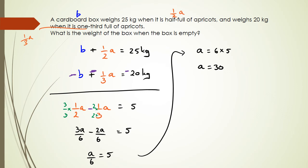So that means a full box of apricots is equal to 30. So that's not what the question is asking. The question is asking for the weight of the box when the box is empty. So I'm going to say B, which is the original equation, plus half of A is equal to 25 kgs. So that means B plus, now we figured out what A is, that was 30 kgs, and that's equal to 25. Now half of 30 is 15.